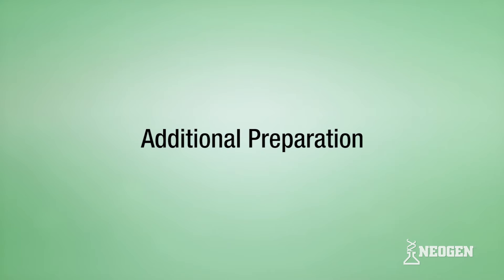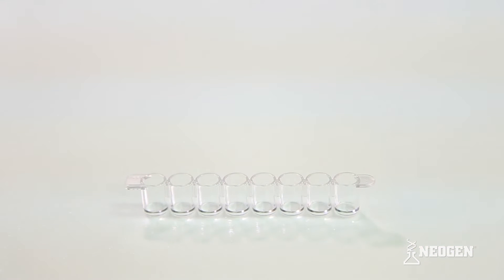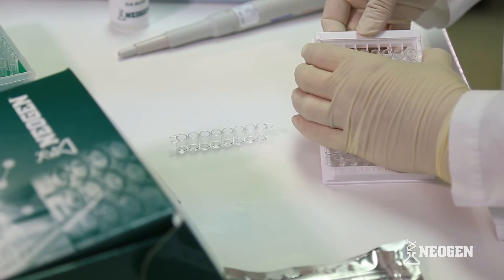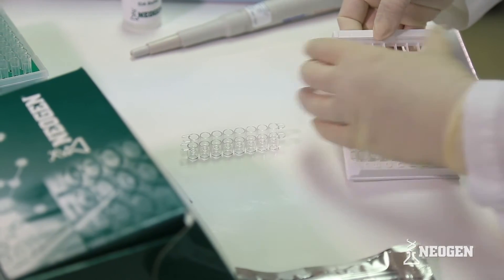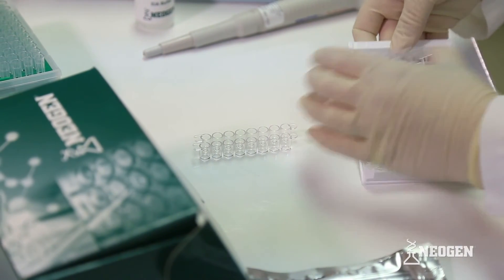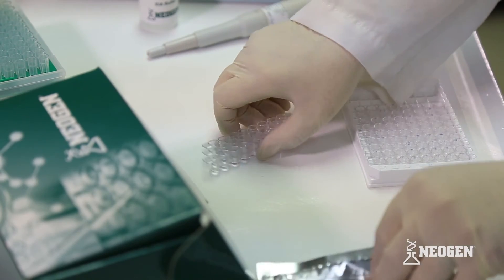Additional Preparation. The antibody coated plate included in the kit has removable strips, letting users run less than a full plate if needed. Do not break a strip of 8 wells, as this will negatively affect your data. To determine how many strips will be needed, add the number of samples and controls that will be tested.